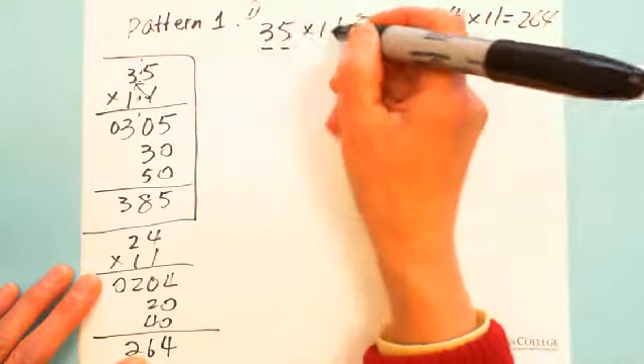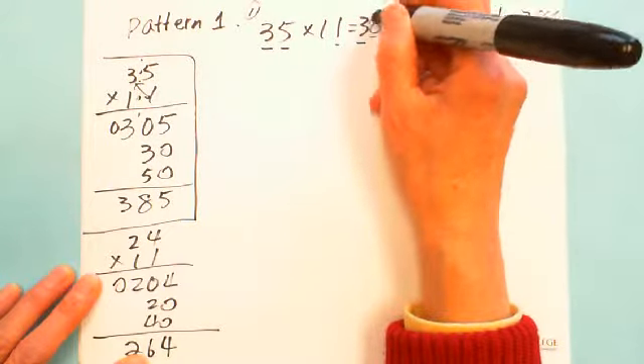Actually, we can find a pattern where any two-digit number multiplied by 11. You can see the first digit is 3, the last digit is 5. 35 multiplied by 11, the first digit is 3, last digit is 5. The last digit is 4. What about the middle digit, the tens digit? This is add these two. 3 plus 5 equals 8. 2 plus 4 equals 6. Let's use this pattern without doing exact multiplication.